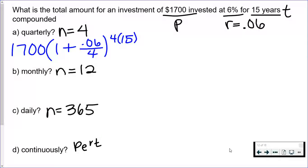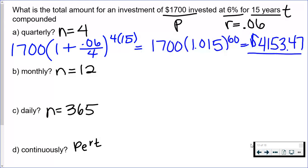You plug everything in: P is 1700, that goes in the front. Then we have one plus the rate—make sure you turn it into 0.06—divided by 4, which is n. And then your exponent is n times t, which is 4 times 15. So you simplify: inside the parentheses becomes 1.015, we raise it to the 60th power before multiplying by 1700, and this should be your answer.